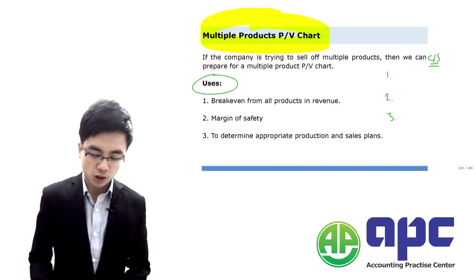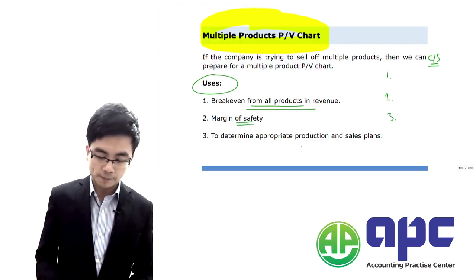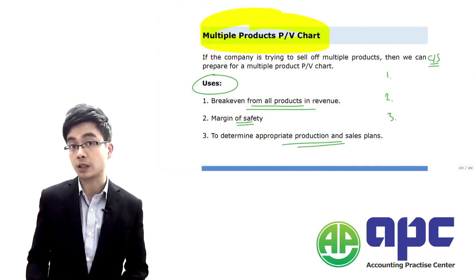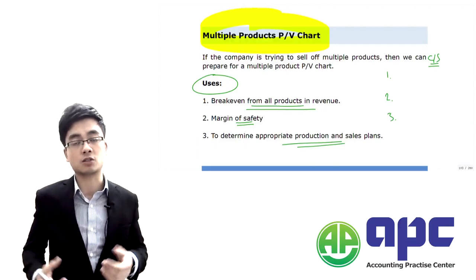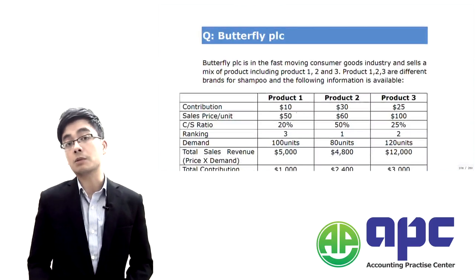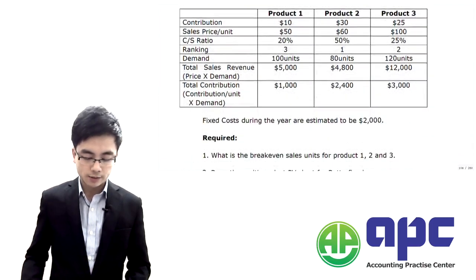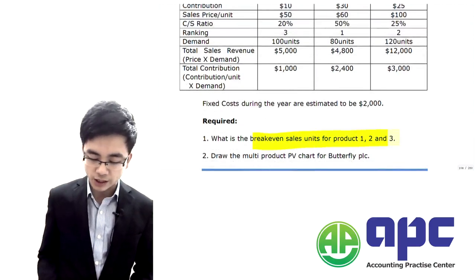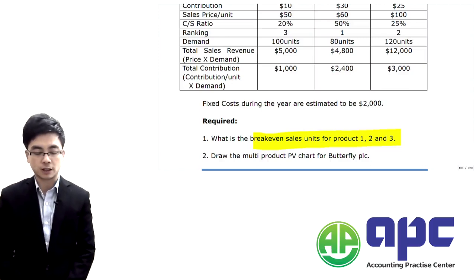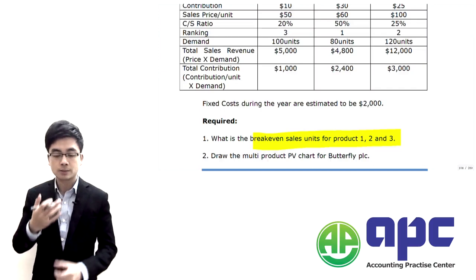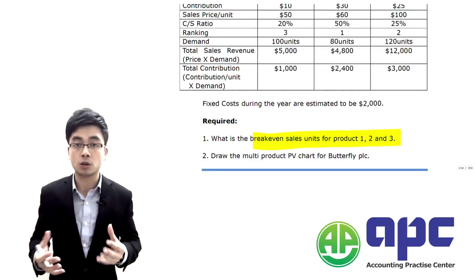The uses of the multi-product PV chart are: first, to show the break-even across all products in revenue terms; second, to establish the margin of safety; and third, to determine the appropriate production and sales plan — which product to sell first, second, and so on. We'll work through the Butterfly PLC question, which requires calculating the break-even sales units for products one, two, and three, and drawing the multi-product PV chart.